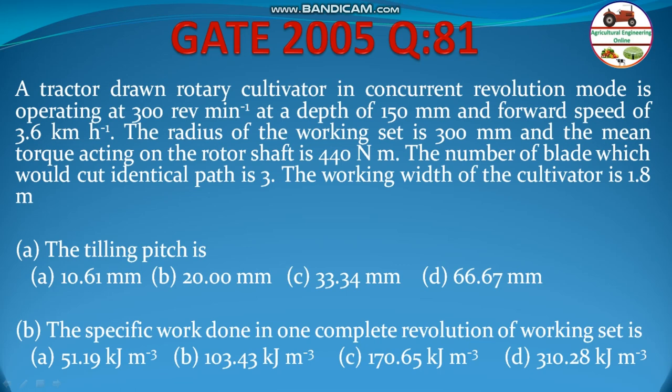Hello students, welcome to my channel. Let us solve a problem from GATE 2005, question 81. A tractor-drawn rotary cultivator in concurrent revolution mode is operating at 300 revolutions per minute, at a depth of 150 millimeter, forward speed of 3.6 kilometer per hour. The radius of the working rotor is 300 millimeter, the mean torque acting on the rotor shaft is 440 newton meter, number of blades is 3, and working width of the cultivator is 1.8 meter. We are asked to find out the tillage pitch and the specific work done in one complete revolution of the working set.